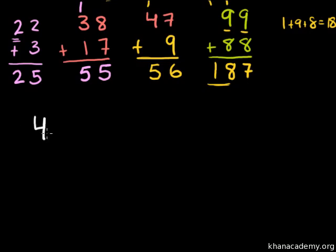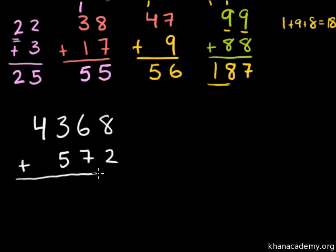So let's do 4,368 plus 572. Let's see what happens here. All right. 8 plus 2. I'll write it down here. 8 plus 2. We know that that is equal to 10. You could do the number line if you need to. 8 plus 2 is equal to 10. Put the 0 in the ones place. Carry the 1.